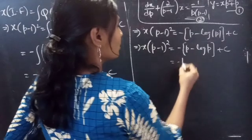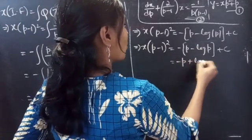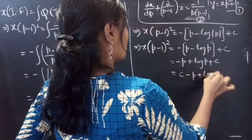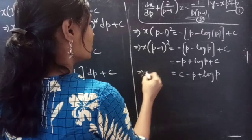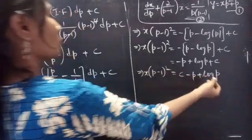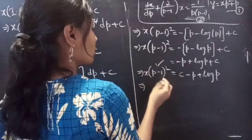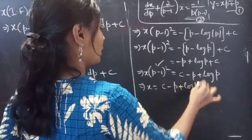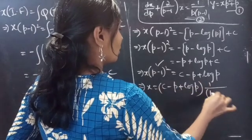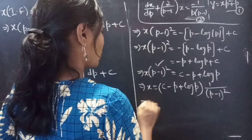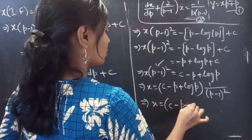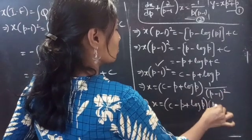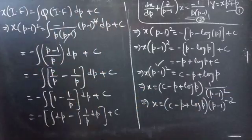Splitting the integrand: −∫[(p/p) − (1/p)] dp = −∫[1 − 1/p] dp = −p + log p. Therefore x·(p−1)² equals c − p + log p. Dividing both sides by (p−1)², we get x equals (c − p + log p)·(p−1)^(−2). Consider this as equation 3.